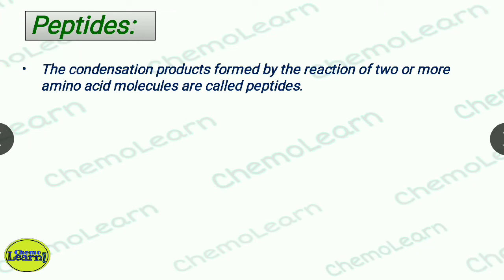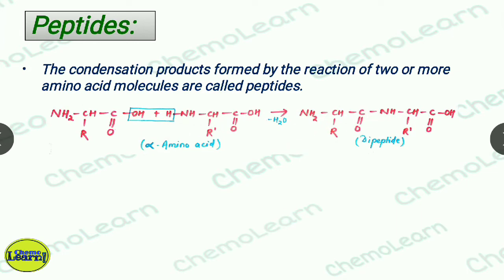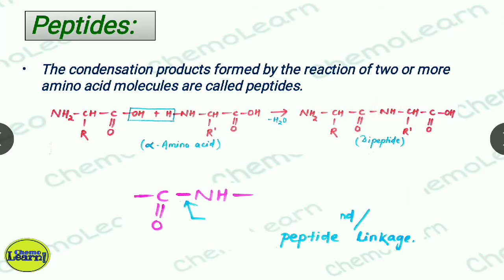When two amino acids are combined, water molecules are released and the compound formed is a peptide molecule. Here, one amino acid contributes its COOH-OH group and the other amino acid contributes its NH2 group hydrogen. The water molecules are released and the peptide molecule is formed. This is a dipeptide, with a C-N peptide bond or peptide linkage.